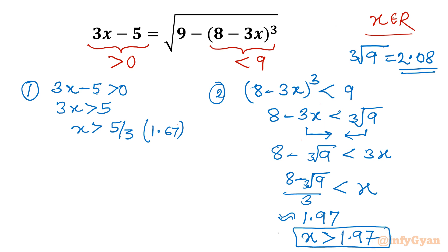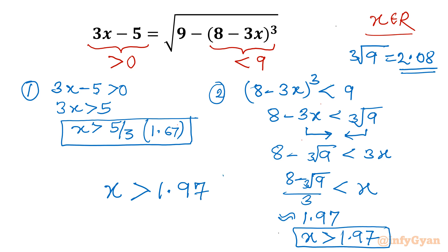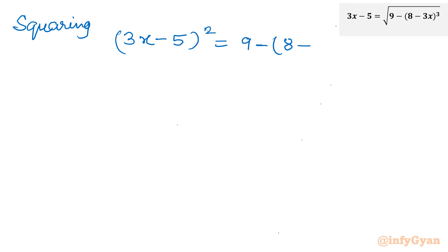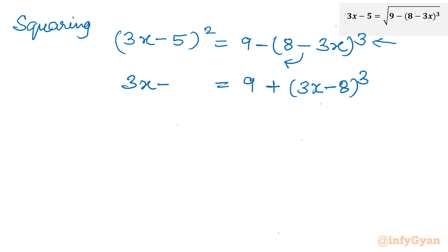Taking the intersection of both conditions, the conclusion is x must be greater than 1.97. Note that x equals 0 is not a solution, so equality is not included. Now I will solve the equation by squaring both sides, giving (3x minus 5) whole square equal to 9 minus (8 minus 3x) whole cube. Taking minus common from the bracket — since the power is odd — this becomes (3x minus 5) whole square equal to 9 plus (3x minus 8) whole cube.